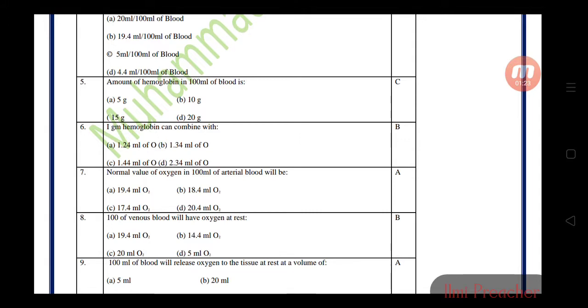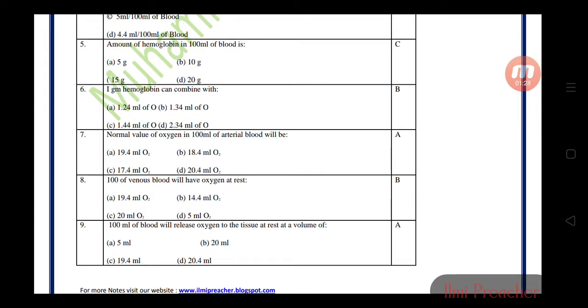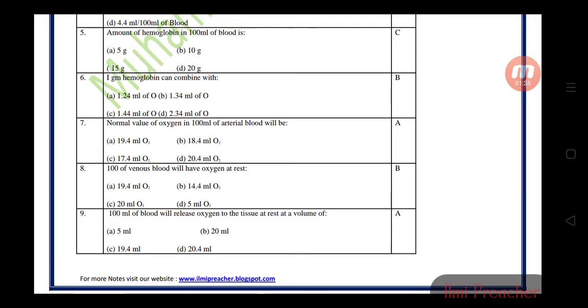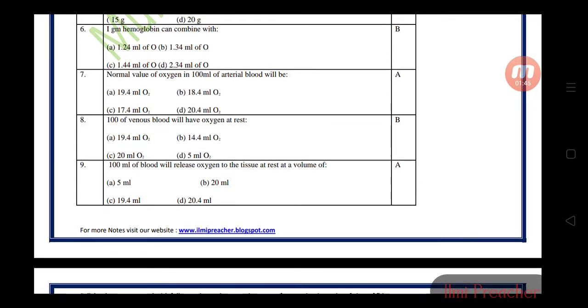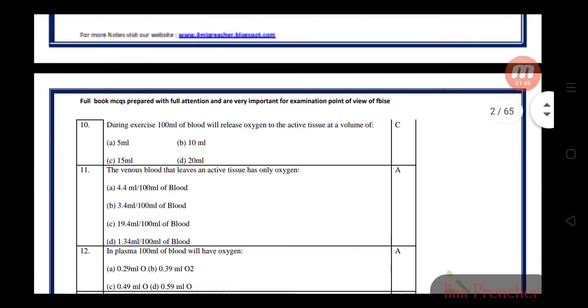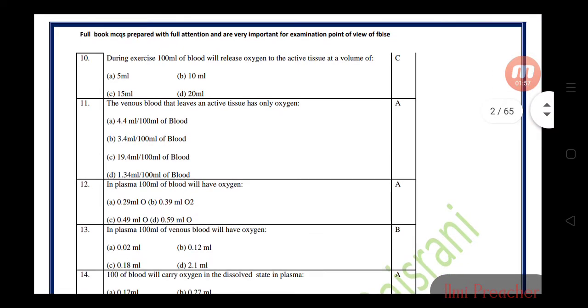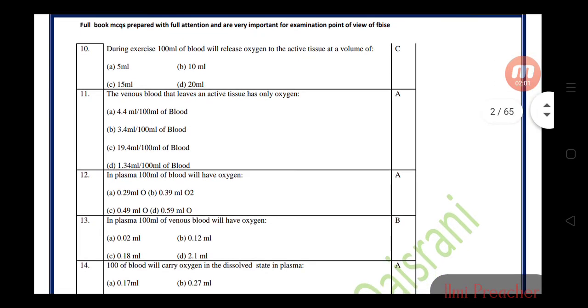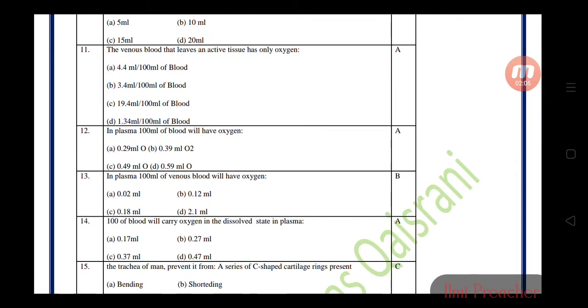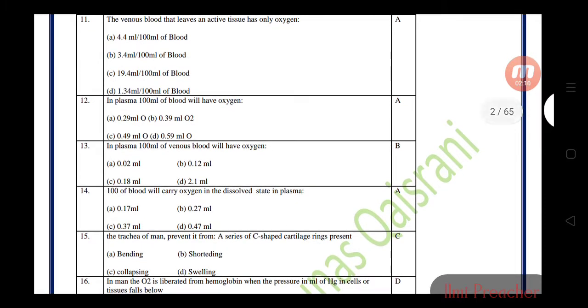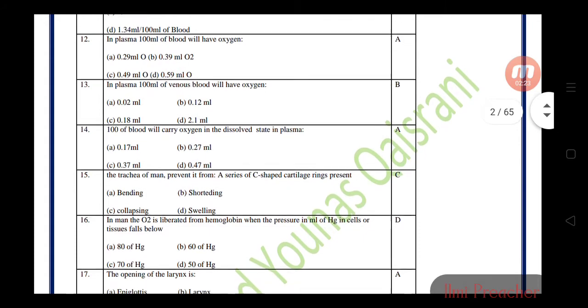Normal value of oxygen in 100 ml of arterial blood is 19.4 ml. The venous blood that leaves an active tissue has only 15 ml oxygen per 100 ml. In plasma, 100 ml of blood will have 0.29 ml oxygen. 100 ml of venous blood will have 0.12 ml oxygen in plasma.